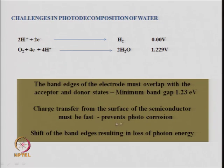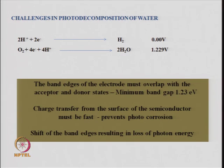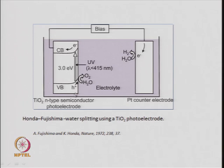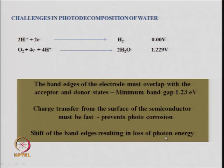The second key point is that charge must transfer from the surface of the semiconductor very quickly. You have electrons and holes in the semiconductor which are required at separate parts of the material for a reaction — they must not recombine, otherwise the electron and hole are wasted. Charge transfer must be fast to prevent photo corrosion, and a shift of the band edges results in loss of photon energy.